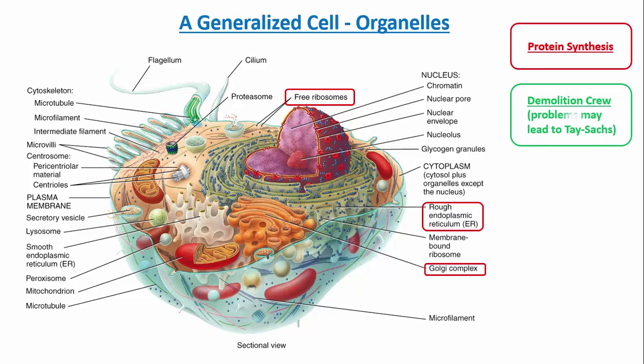The next thing to think about is the demolition crew. There are always waste products in the cell — just like a garbage truck drives by your house each week to pick up the garbage. In the cell, we have metabolic waste, and we have to get rid of these metabolic wastes. Otherwise, we'll have major problems within the cell, and the cell will actually undergo malfunction or cell death.